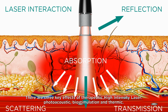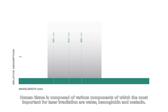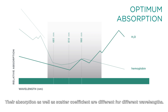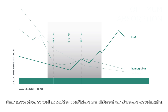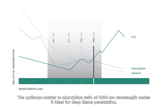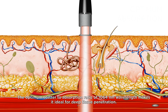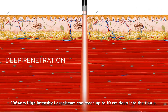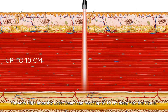There are three key effects of therapeutic high-intensity laser: photoacoustic, biostimulation and thermic. Human tissue is composed of various components, of which the most important for laser irradiation are water, hemoglobin and melanin. Their absorption, as well as the scatter coefficient, are different for different wavelengths. The optimum scatter to absorption ratio of the 1064 nanometer wavelength makes it ideal for deep tissue penetration, and a 1064 nanometer high-intensity laser beam can reach up to 10 centimeters deep into the tissue.